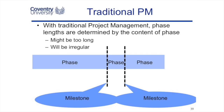In this video clip we're going to look at agile project management and compare it directly with traditional project management. In traditional project management, projects might be broken down into phases separated by key milestones. These phases might be of different lengths — irregular — a long phase, a short phase, and a longer phase. The phases could be three months, two months, one month, but they're separated by important events where management approves the progress of the project to the next step.